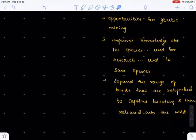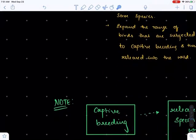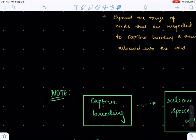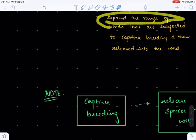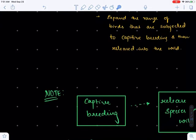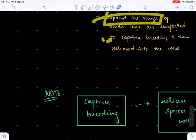When research is done effectively, that clearly indicates we can effectively save these species in the near future from being endangered or extinct. It also helps in expanding the range of birds. When birds are captured, allowed to breed, and left in the wild, all these collectively help in expanding their range.